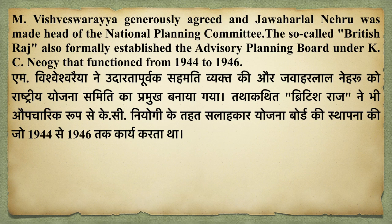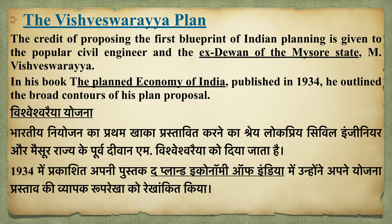M. Vishweshwarya was the head of the National Planning Committee. Even during British Raj there was an advisory planning board. Vishweshwarya was an ex-Dewan of Mysore state and a popular civil engineer. He was the first person who started the first blueprint for Indian planning. His book was called 'The Planned Economy of India', which was published in 1934, giving details about plans and proposals. You can also be asked in the exam: 'The Planned Economy of India is written by whom?' — the answer is M. Vishweshwarya.